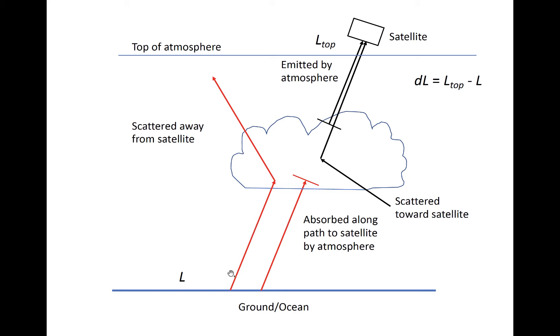Radiation emitted by the ground, ocean, or the atmosphere below the cloud can either be absorbed by the cloud, or scattered by the cloud in any direction away from the satellite.